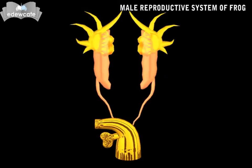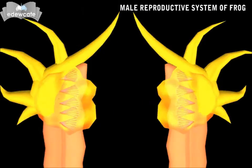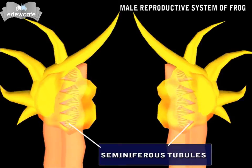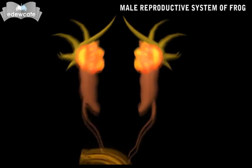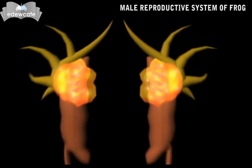The testis is an oval and yellow body. Inside the testes, there are a number of coiled tubules called seminiferous tubules. Spermatozoa are produced in the seminiferous tubules.